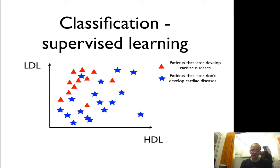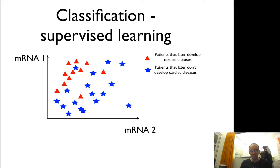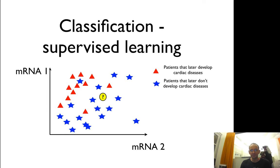You can see here that it seems to be bad to have low HDL and high LDL, because that's kind of the corner of the heart disease patients. But you can also think about other measures. You can have mRNA-1, mRNA-2 levels, for instance. And then, of course, the trick is: what happens if you have this yellow one? Would you predict it to develop heart disease or not?